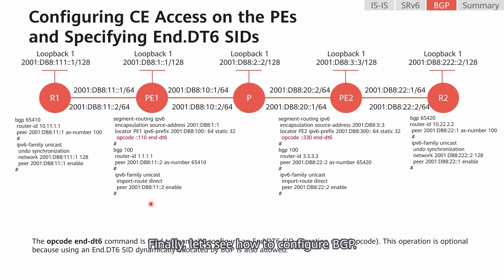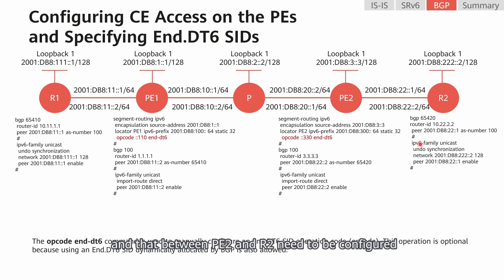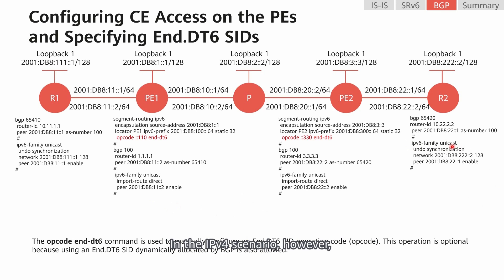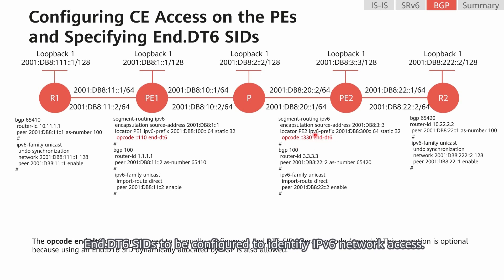Finally, let's see how to configure BGP. For this step, there are mainly two differences between the IPv6 and IPv4 scenarios. In the IPv6 scenario, the eBGP peer relationship between P1 and R1 and that between P2 and R2 need to be configured in the BGP IPv6 unicast address family. In the IPv4 scenario, however, the corresponding configurations need to be performed in the BGP IPv4 unicast address family. This is the first difference. The second difference is that the IPv6 scenario requires end.dt6 SIDs to be configured to identify IPv6 network access, whereas the IPv4 scenario requires end.dt4 SIDs to be configured.